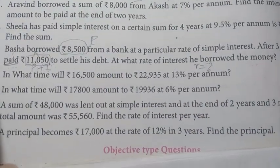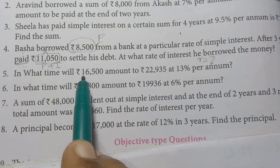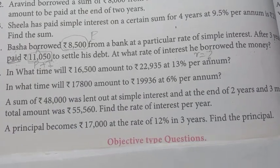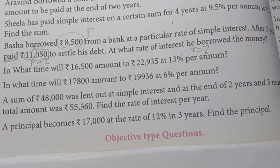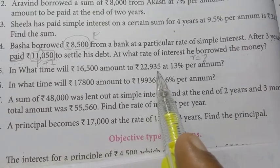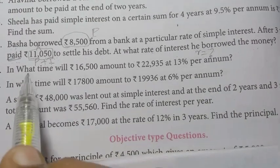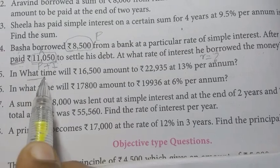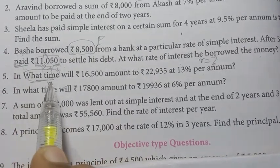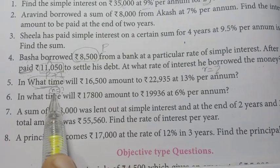The 5th sum: In what time will rupees 16,500 amount to rupees 22,935 at 13% per annum? We need to find the number of years.